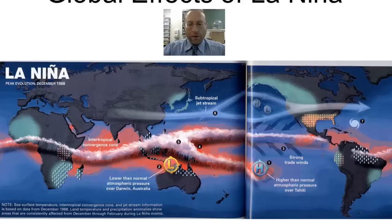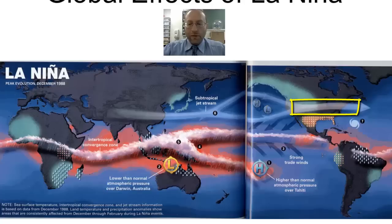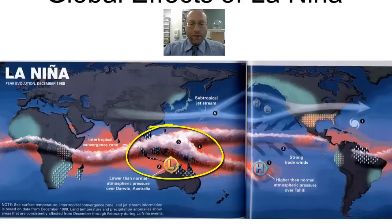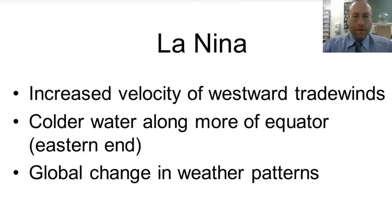If you look on the map, where we had a low before, now we have a high; where it was wet, it's dry; where it was dry, it's wet. In Peru, before it was overly wet, now it's overly dry. In the southern United States, it was wet, now it's dry. The jet stream has gone up a little further over North America. During a La Niña year, in the eastern part of the United States and in the Caribbean, there are more hurricanes. Over Australia and Indonesia, the low is back there, more intense. For your notes: there's increased velocity of the westward trade winds, colder water along more of the equator especially the eastern end, and once again a global change in weather patterns.